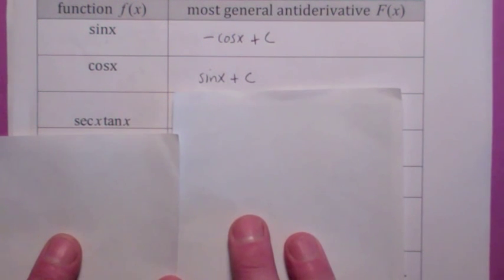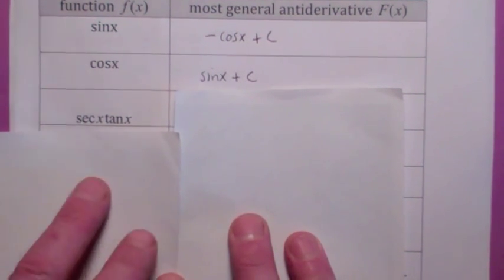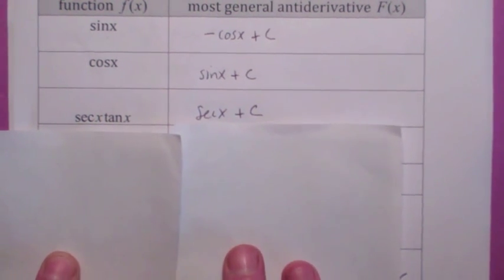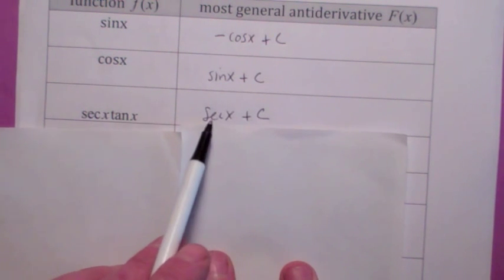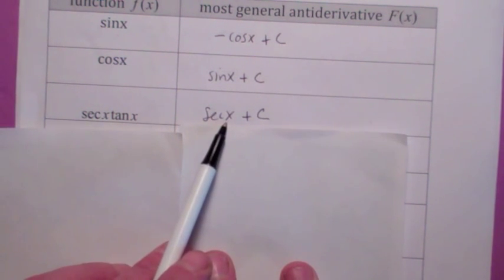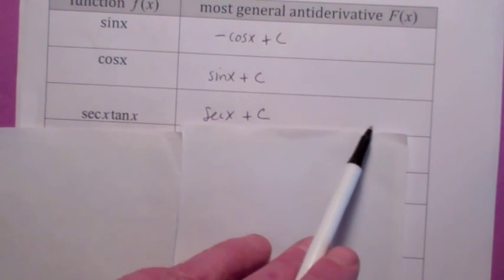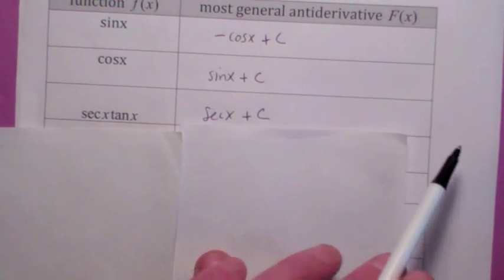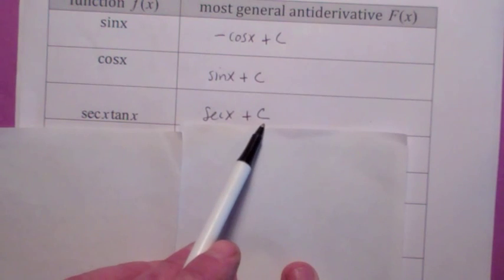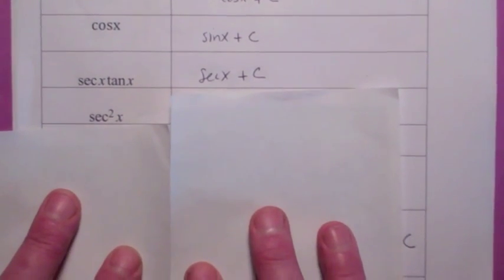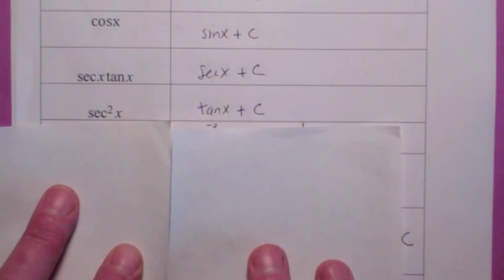What's the most general antiderivative of secant times tangent? I'm looking for a function whose derivative is secant tangent — that's secant of x plus C. In terms of an interval, it's a bit messy because secant of x is not defined whenever x equals an odd multiple of pi over 2, i.e., whenever the cosine is 0. So you actually have separate intervals, and the constant could be different on each interval. That's subtle, but we'll talk about that more in class. The most general antiderivative of secant squared is tangent of x plus C.